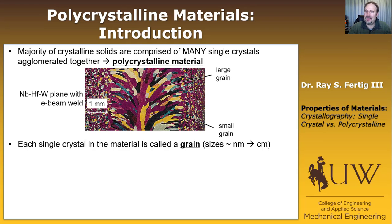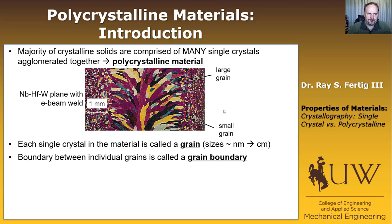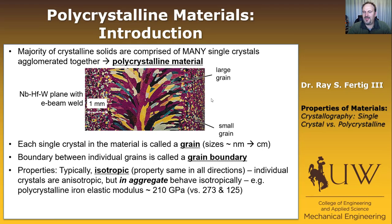Each individual crystal in a polycrystalline material we call a grain. The sizes of grains can range from nanometers all the way up to centimeters — a seven-order-of-magnitude span of size. A lot of our heat treatments for steels are designed to control grain size and regularity. The boundary between individual grains is called a grain boundary. Properties in polycrystalline materials are typically isotropic — the same in all directions — because even though individual crystals are anisotropic, in aggregate they're all randomly rotated and clump together to behave the same in all directions.